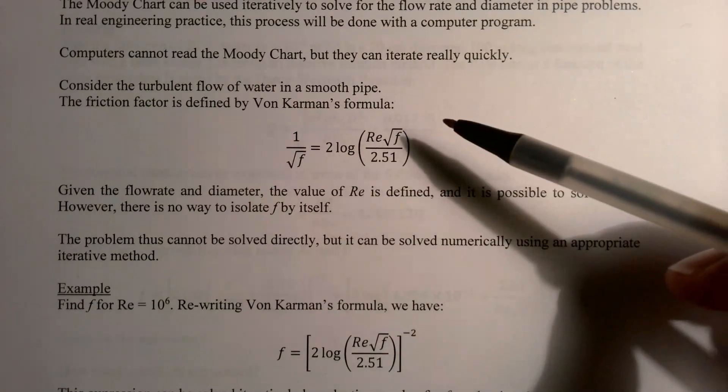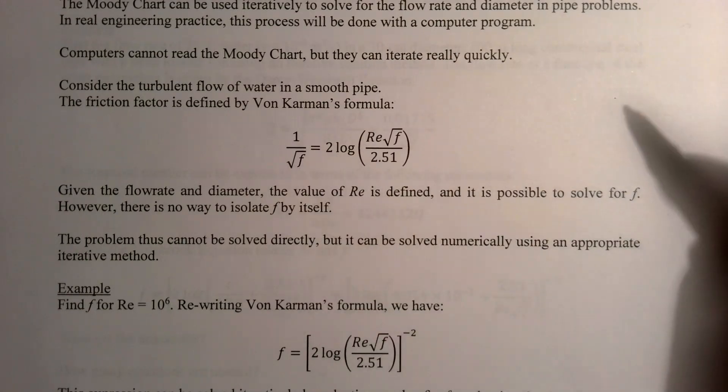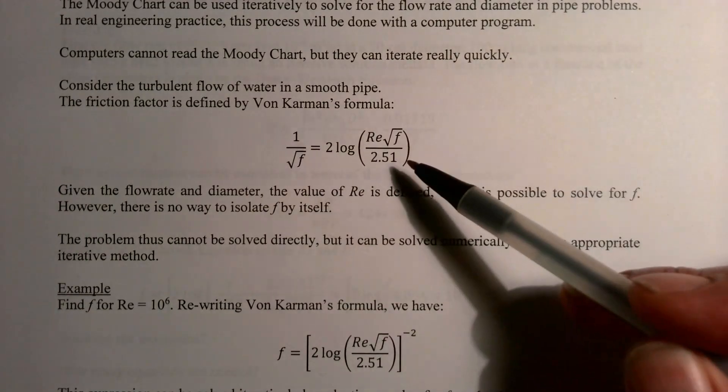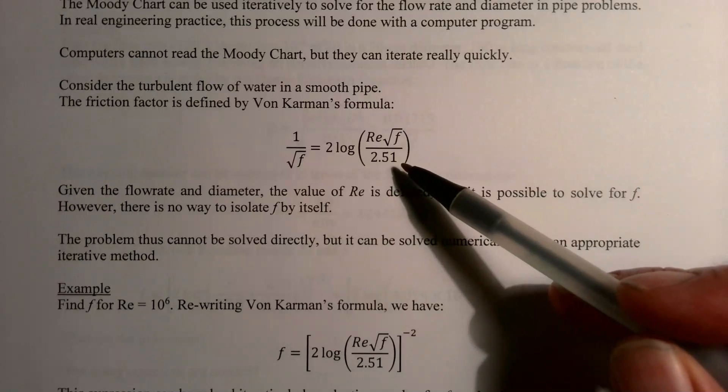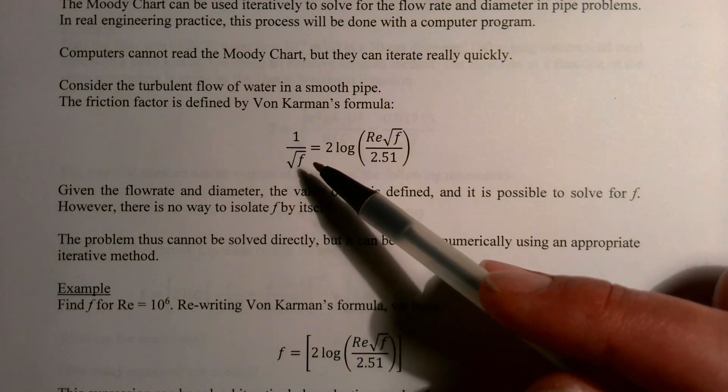If you wanted to get rid of this log, you could do 10 to the power of both sides or e to the power of both sides, but then you'd have this term in an exponential and this term not, and so you'd have the same issues you have with the logs. There's no way you can put these two f's together and solve for it by itself. So this formula gives us a good example of how we can solve for the value of f using an iterative approach.